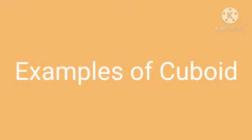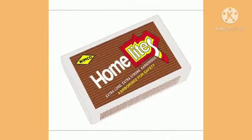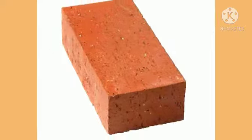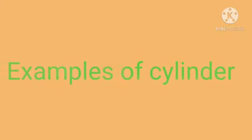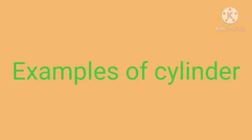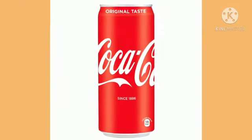Examples of cuboid are book, matchbox, brick, etc. Examples of cylinder are pencil, can, etc.